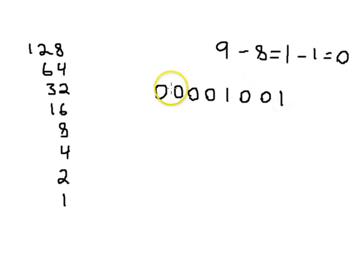So then the binary representation of 9 would be 0, 0, 0, 0, 1, 0, 0, 1. So that's how you could do it, that method. Let's try another number now.